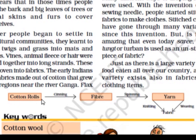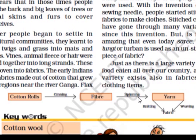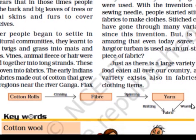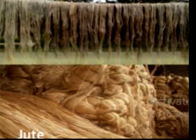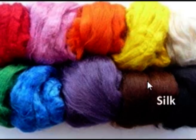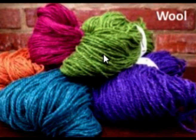Summary: Cotton bolls go through ginning to separate fibers from seeds, then spinning converts fibers into yarn, and yarn can be woven or knitted into fabric. Cotton, jute, silk, and wool are the main natural fibers. Cotton comes from cotton plants, jute from the jute plant stem, silk is an example of an animal fiber from silkworm cocoons, and wool is obtained from sheep.